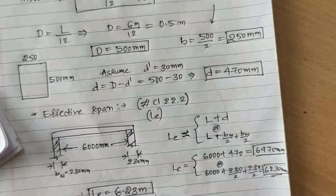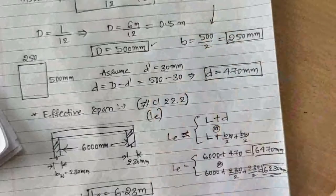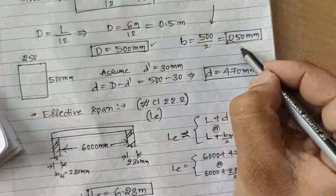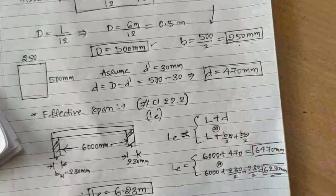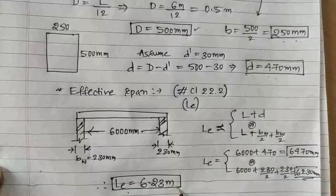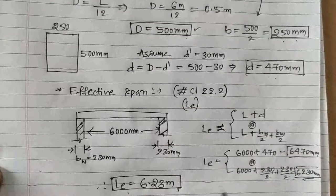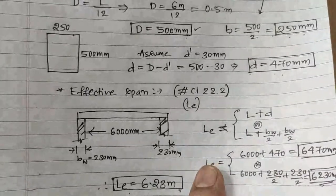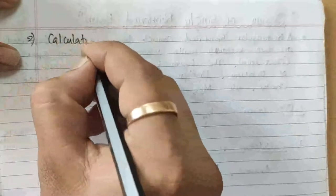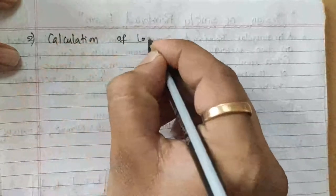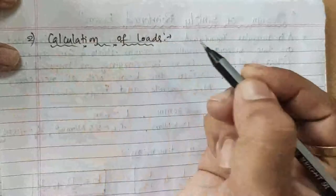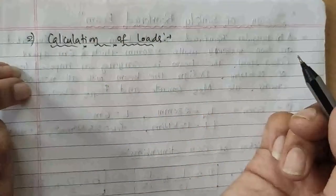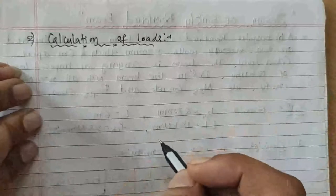Summary of section properties: overall depth D = 500 mm, width b = 250 mm, effective depth d = 470 mm, effective length Le = 6230 mm. Next, we move on to the calculation of loads.